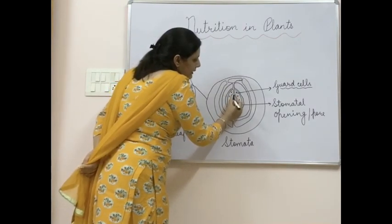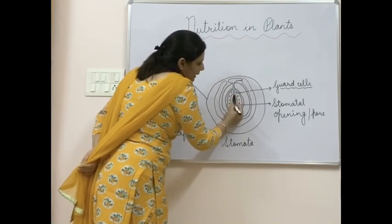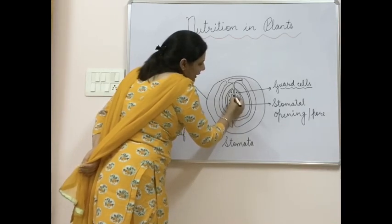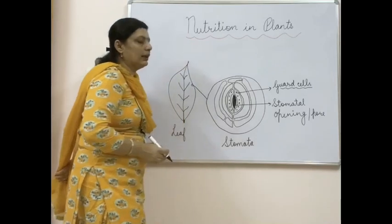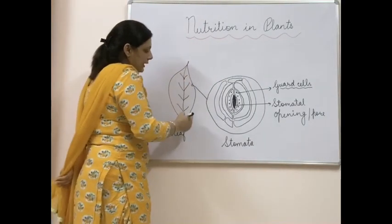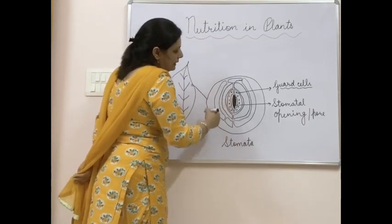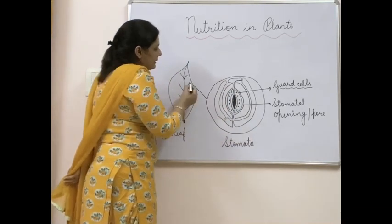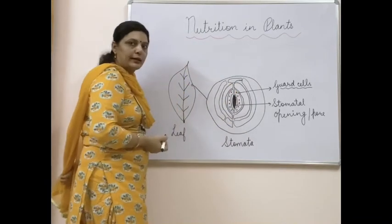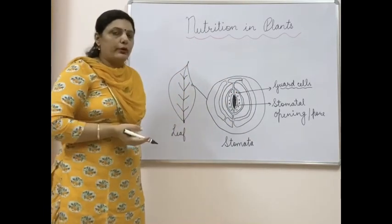This pore is responsible for the exchange of gases. These pores are present scattered all over the leaf. Here I have shown a cross-section of the leaf so that you can easily understand. The circle drawn here shows the stomata in detail. The stomata play the most important role in the leaf.